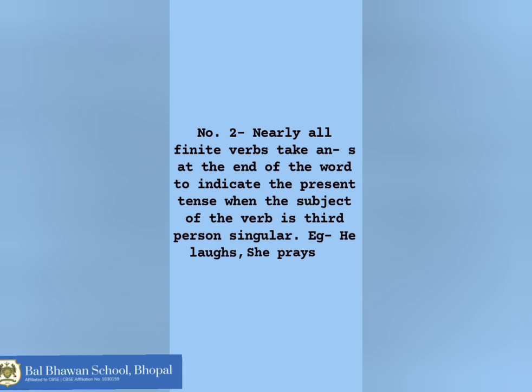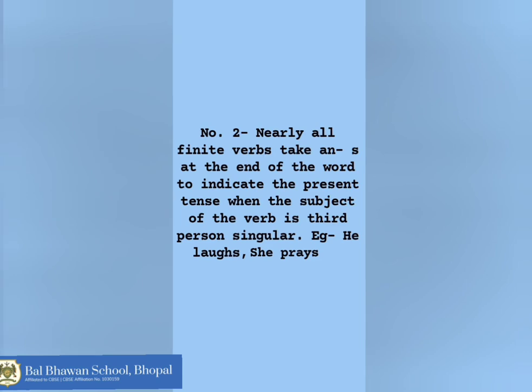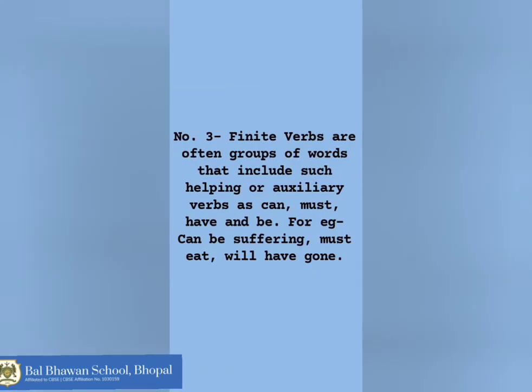Number three: finite verbs are often groups of words that include such helping or auxiliary verbs as can, must, have, and be. For example: can be suffering, must eat, will have gone.